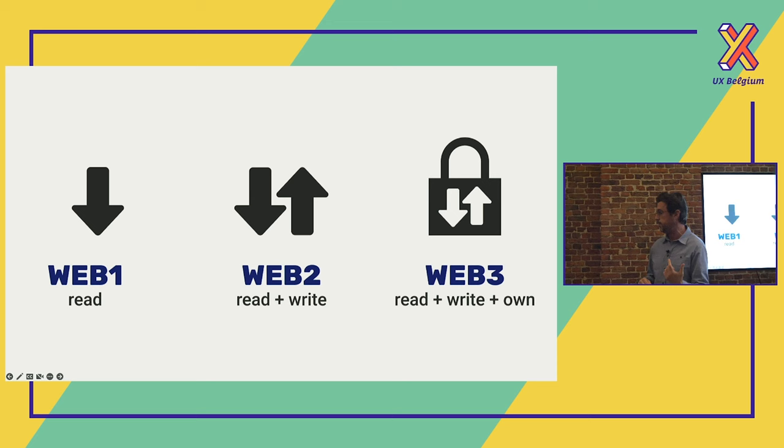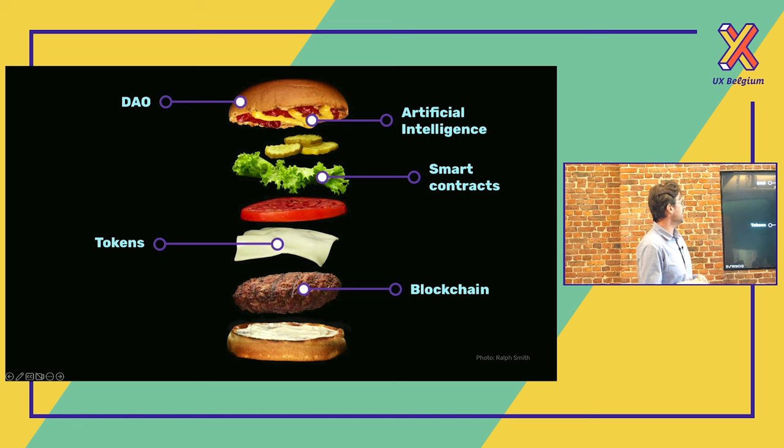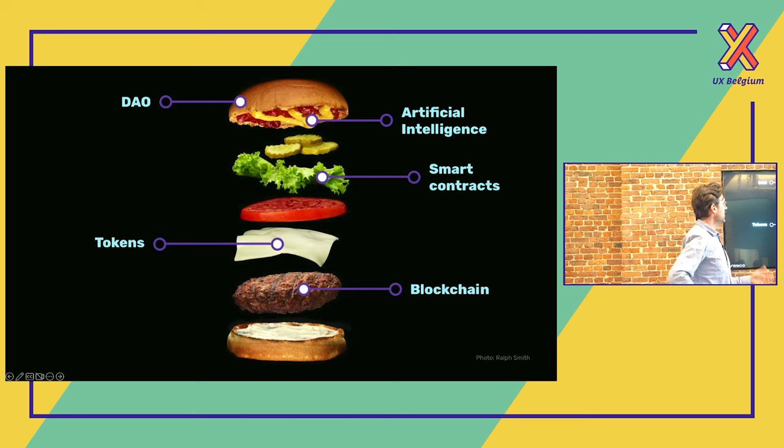I tried to draw something like an ecosystem of Web3 — it was too difficult, so I used the layers of a hamburger. For us, Web3 consists of five pillars: the DAO, artificial intelligence, smart contracts, tokens, and blockchain — and they all come together in Web3.